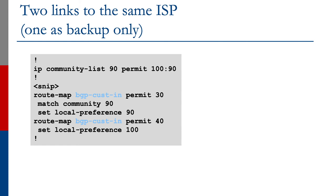Inside that route map, we match community list 90, which permits the community 100:90. The first statement says if you match that community, set the local preference to 90. The next statement has no match, so it matches every other prefix that did not match above, and sets local preference to 100, which is the default. Again, it's good to be explicit.